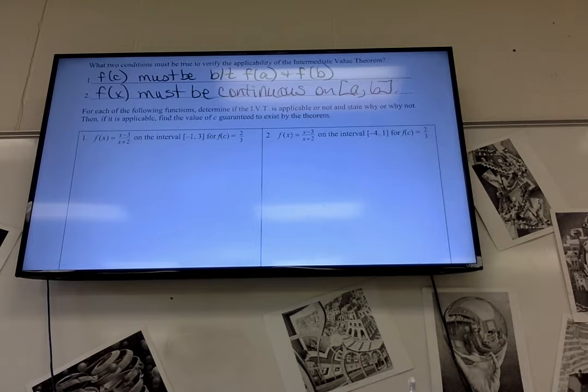Are we going to have to do like proofs on every math thing we do now? This is a theorem. Oh, like give a list thingy? Yeah, for some thingies. I love these list things. So for each of the following functions, we're going to determine if the IVT is applicable or not. And we're going to state why or why not. Then if it is applicable, find the value of C guaranteed to exist by the theorem.